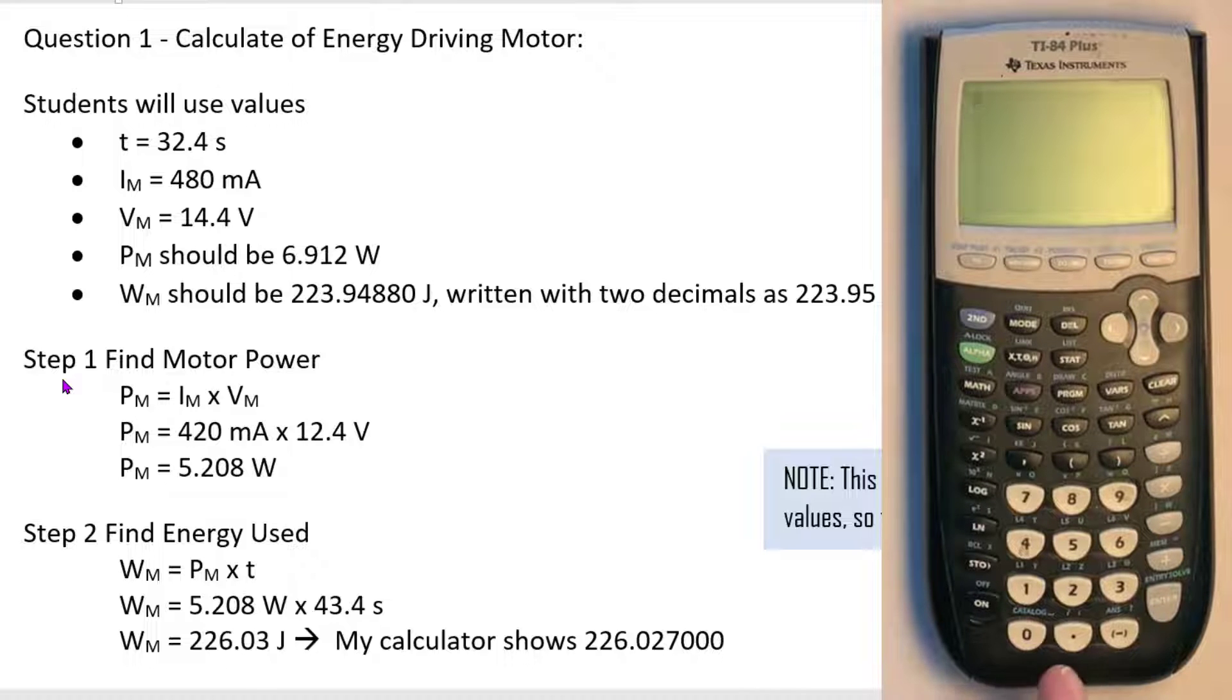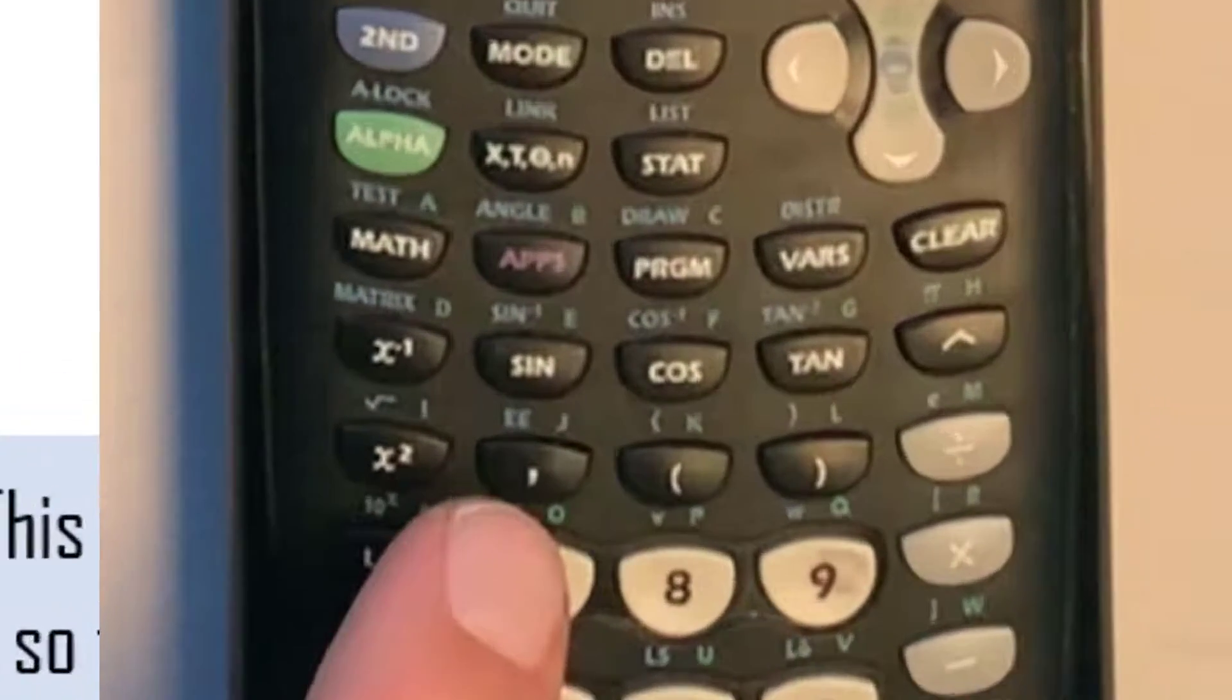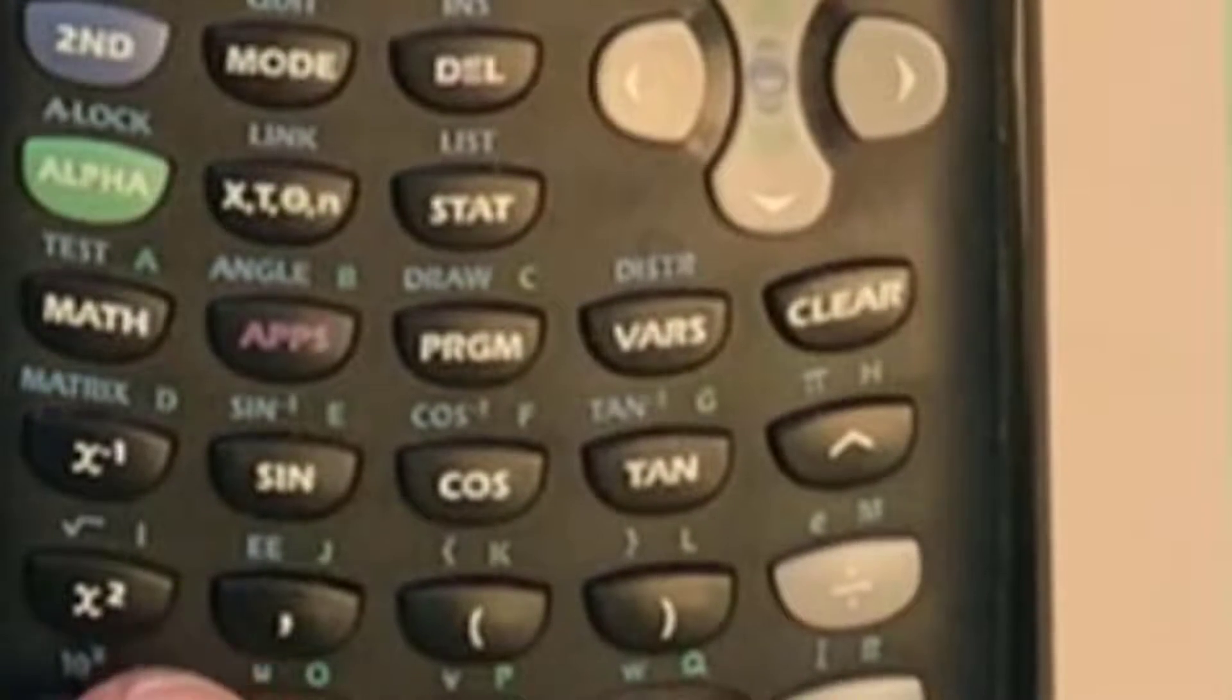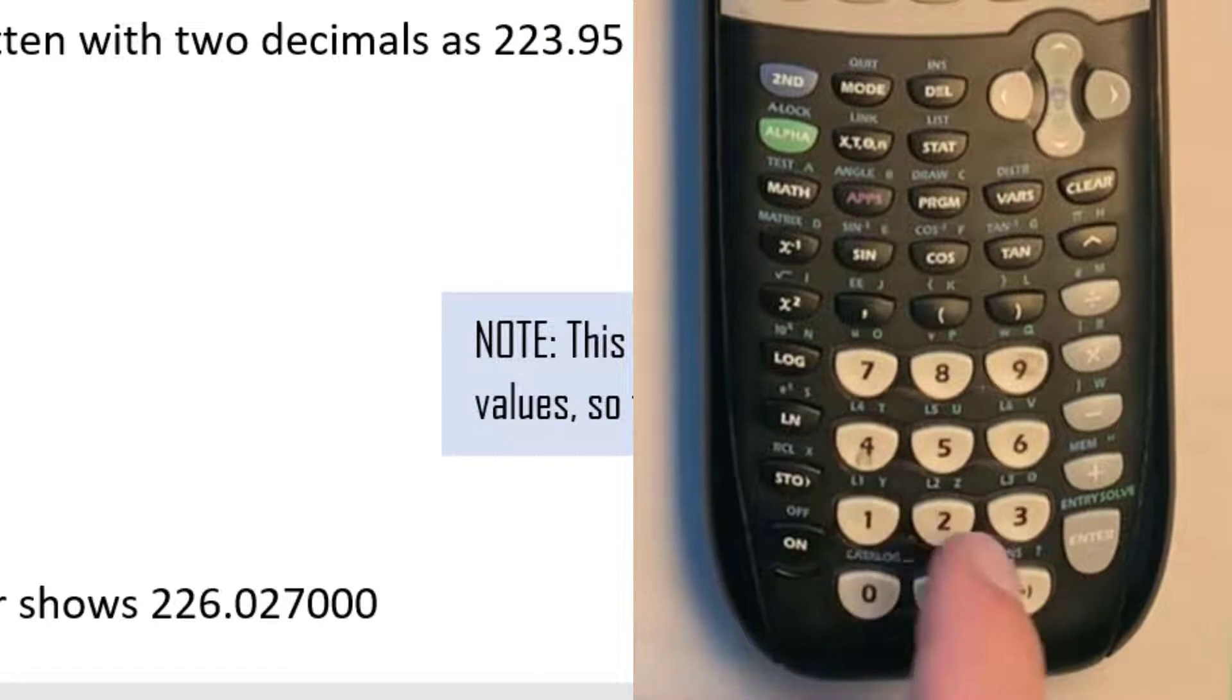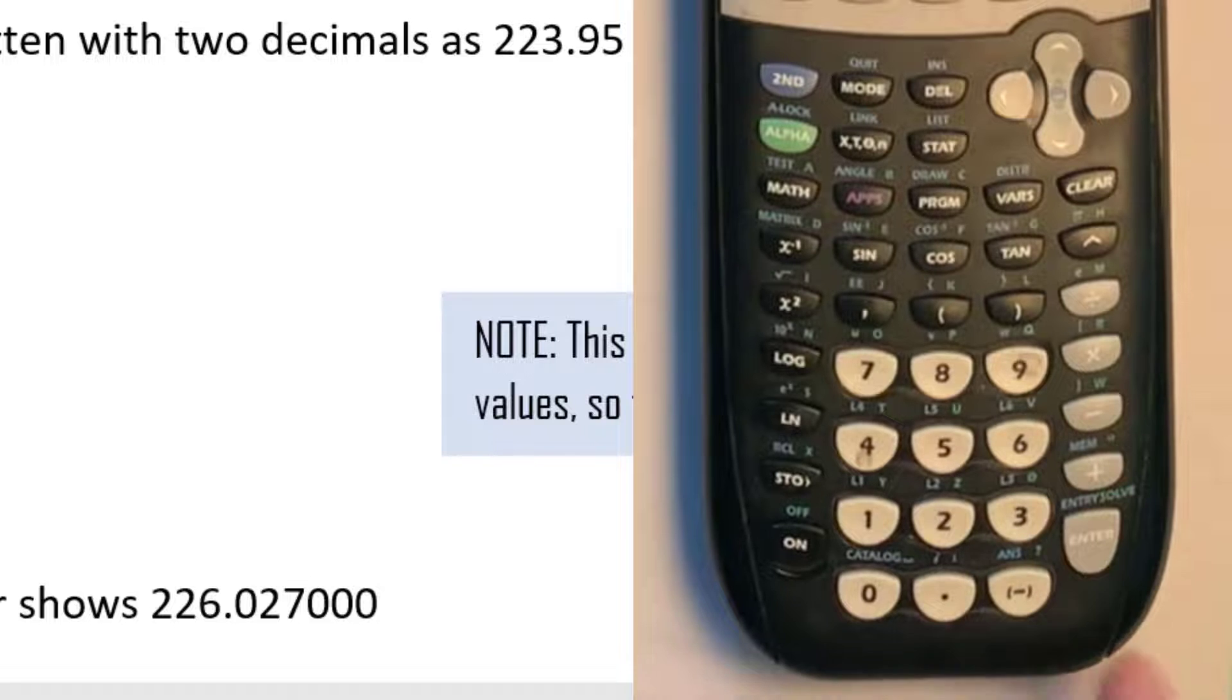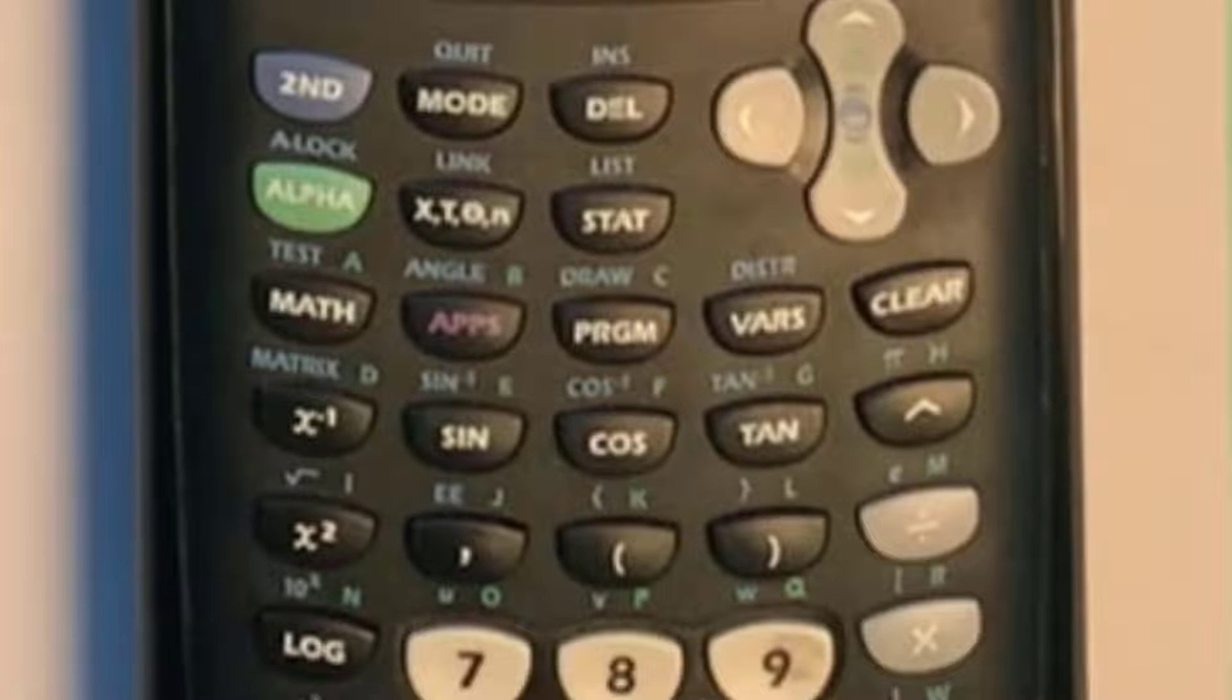So as opposed to typing in 0.42, I'm going to use engineering notation. To do that on my calculator I'm going to access that double E there. I'm not going to type in times and then 10 and then use that symbol to do my exponent.